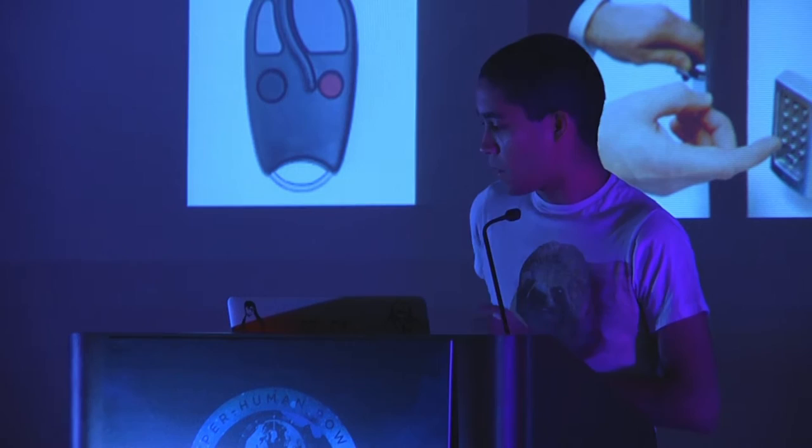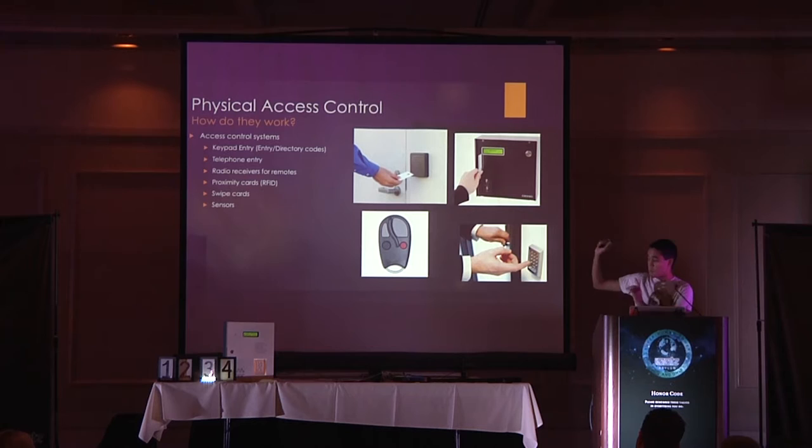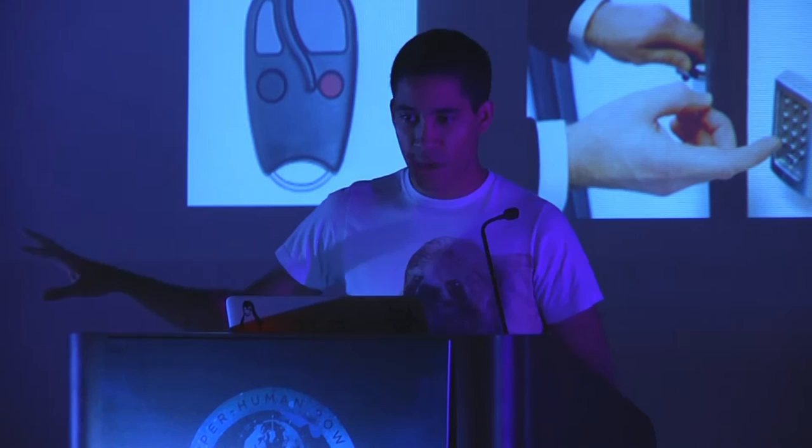So how do they work? To open the doors they control, there are a bunch of ways to get in. You can type on the keypad, there are little transmitters — if you have the right key it'll let you in when you press the button. There's RFID, and plenty of other ways to allow this device to let you in.